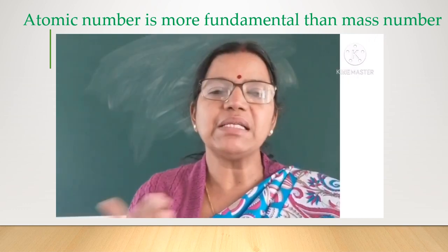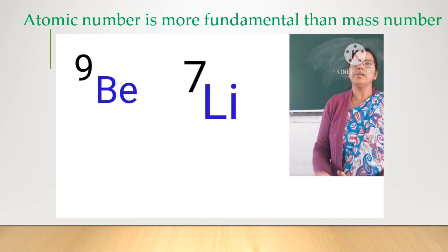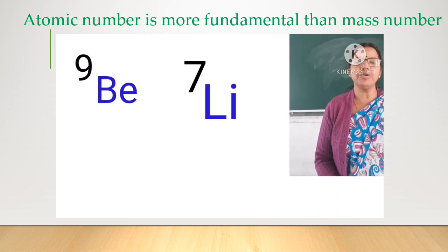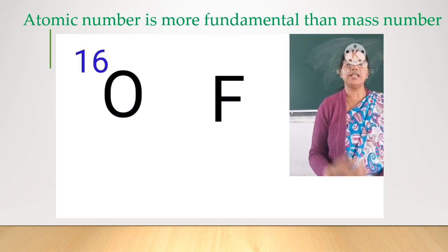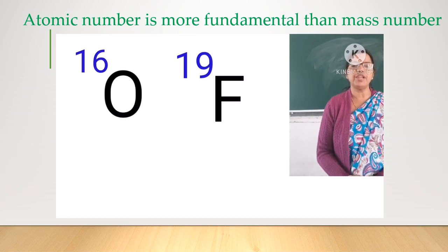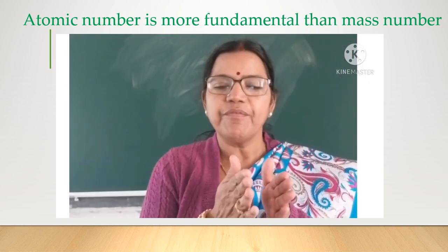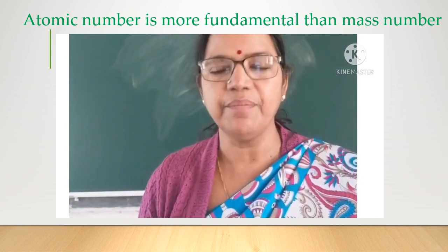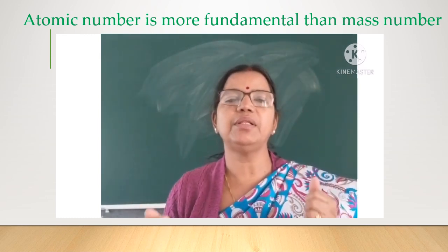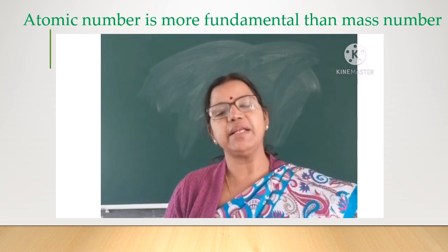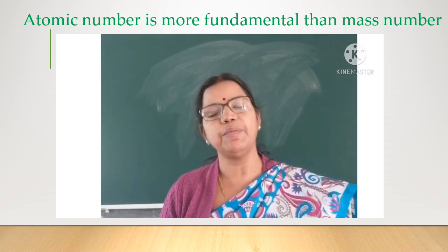But if you see the mass number, there is no such regularity. For example, the mass number of lithium is 7 and beryllium is 9 — a difference of two units. Between oxygen and fluorine, the mass number of oxygen is 16 and that of fluorine is 19 — a difference of three units. Hence, when elements are arranged in the increasing order of atomic number, we can identify how many elements may come between two elements, since there is only one unit difference. But in case of mass number, we cannot say exactly how many elements come in between.